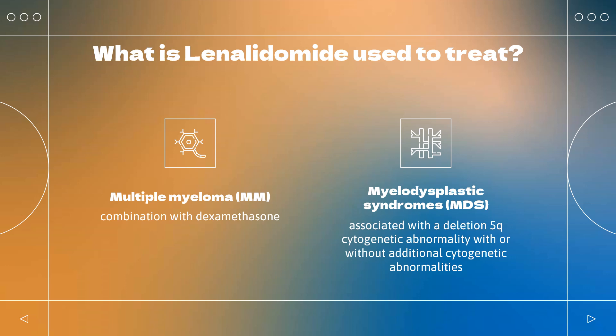Lenalidomide is indicated for the treatment of adult patients with multiple myeloma (MM) in combination with dexamethasone. It is also indicated as maintenance therapy in multiple myeloma following autologous hematopoietic stem cell transplantation (auto-HSCT). It is indicated for the treatment of adult patients with transfusion-dependent anemia due to low- or intermediate-1-risk myelodysplastic syndromes (MDS) associated with a deletion 5Q cytogenetic abnormality, with or without additional cytogenetic abnormalities.